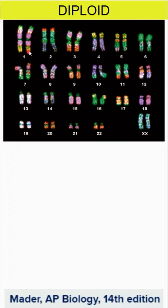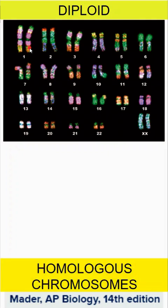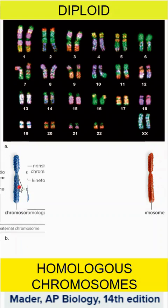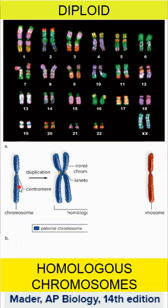We have homologous chromosomes — two number ones, two number twos, two number threes. We get one of those chromosomes from your father and one from your mother. They're going to have the same traits but not the exact same genes on the chromosomes.